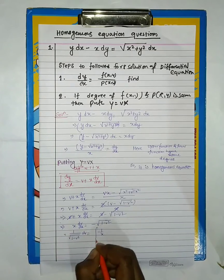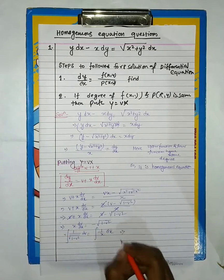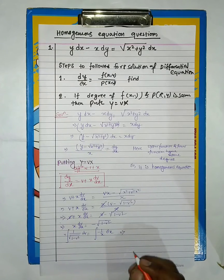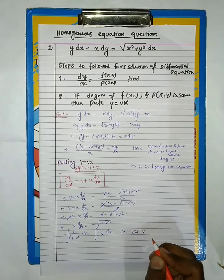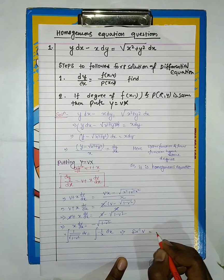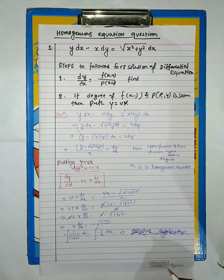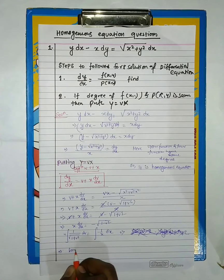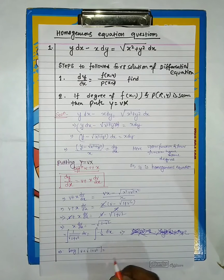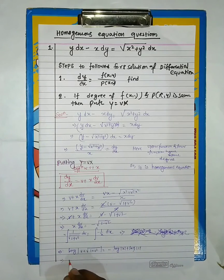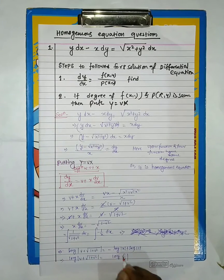Next, we calculate the value and proceed using the variable separable method, just as in this problem. We substitute dy/dx with v plus x dv/dx, and substitute y equals vx. We get v minus the square root of (1 minus v squared), and the v terms cancel each other.